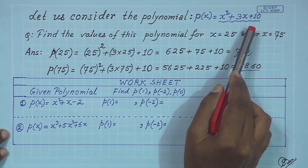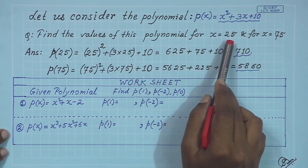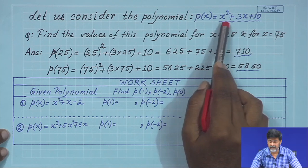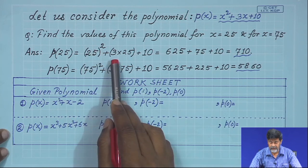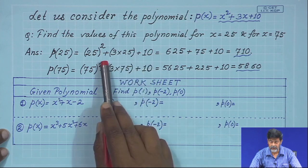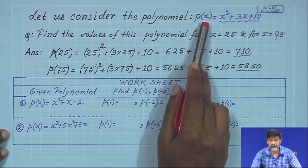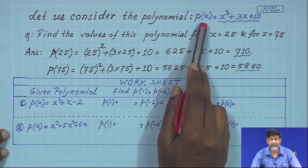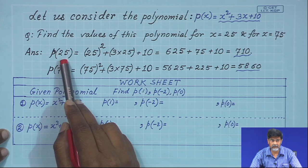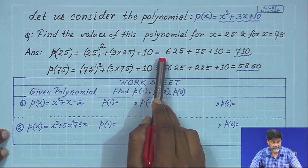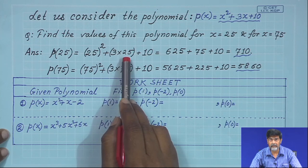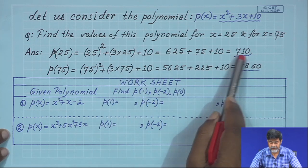If we put different values of x, we get different values of p(x). Suppose we put x = 25. Then p(25) = 25² + 3×25 + 10 = 625 + 75 + 10 = 710. This is the value of p(25).